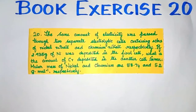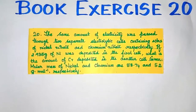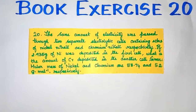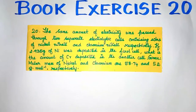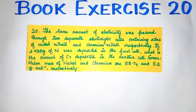So, how do we solve it? The two electrolytic cells have the same amount of electricity passed through them. We say that the same amount of electricity flows through both cells.